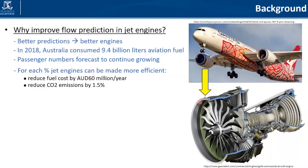If we better understand or predict the flow inside of an engine, we can make better engines, and why that is important can be seen from the sheer scale of the use of such engines. In 2018, Australia alone consumed about 9.4 billion liters of aviation fuel, and even though we are a pretty travel-happy nation, this is not the biggest market. There are other markets like the U.S., Asia, and Europe that are even larger, and passenger numbers are forecast to continue growing. The projections still show that we will see further increases in travel numbers, meaning even more aviation fuel will be needed.